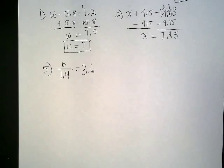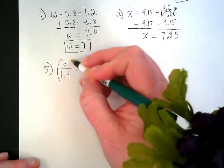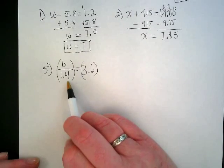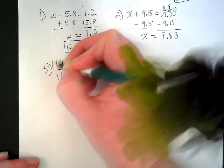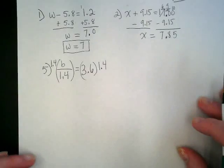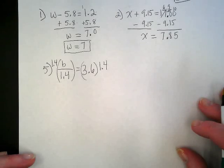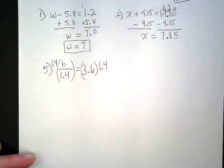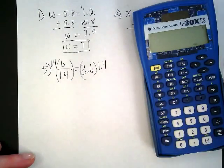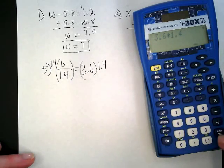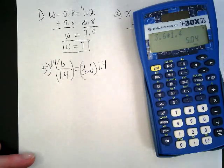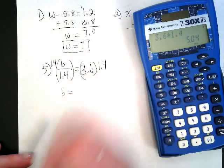The book has b divided by 1.4 equals 3.6. I see division, so we're going to do multiplication, right? And we're going to multiply by the number that's the divisor, the number that's dividing from the b. So we're going to multiply 1.4 on both sides. And this is where you're going to be happy with me because I'm going to let you use your calculator. So go ahead and pull it over and enter it, being really careful that you get your decimals in there.